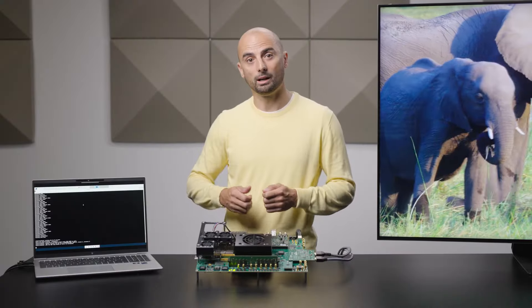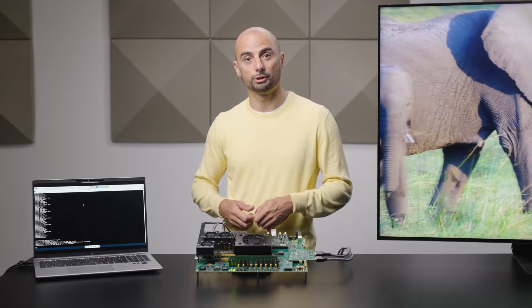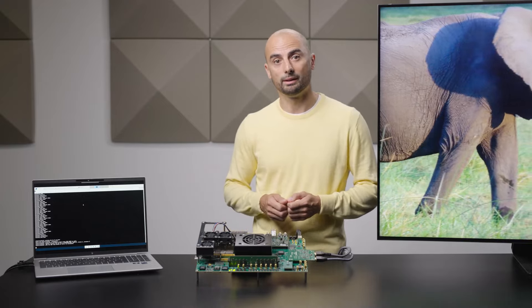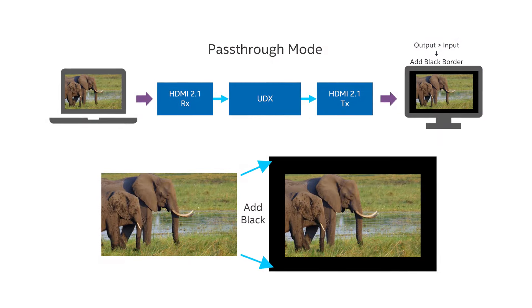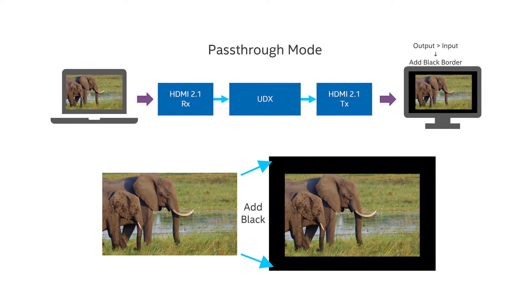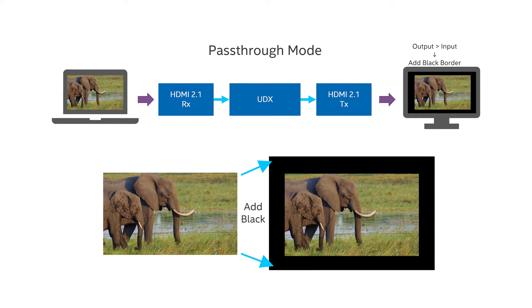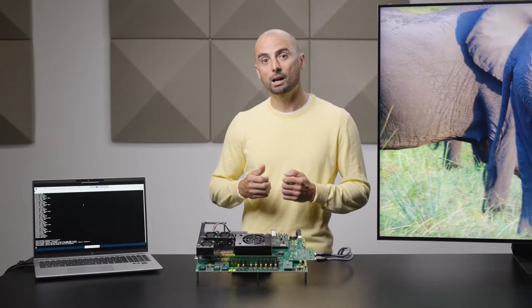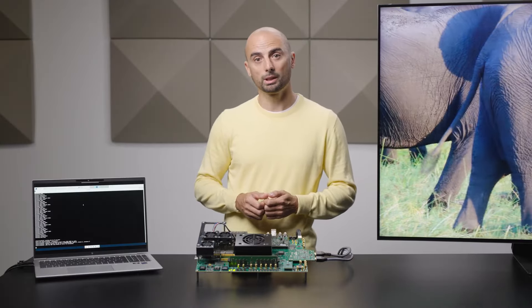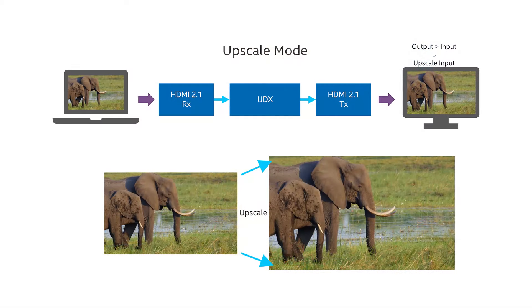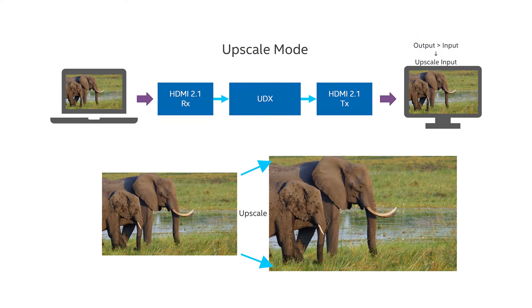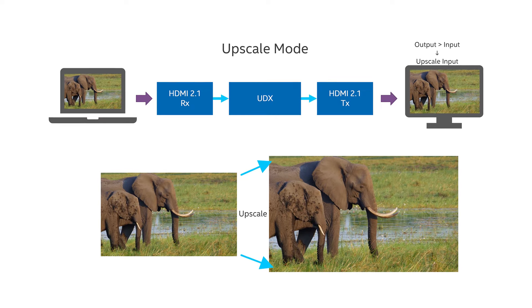If the output resolution is larger than the input, then the mixer IP core adds a black border around the input video. In upscale mode, the input video is upscaled to fill the selected output resolution. If the input resolution is smaller than the output, the appropriate upscale is simply applied.